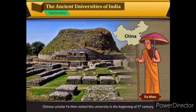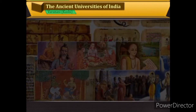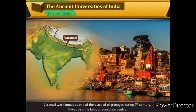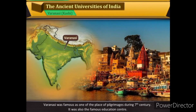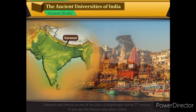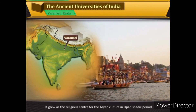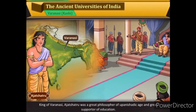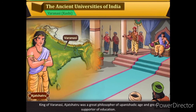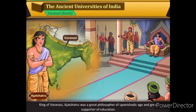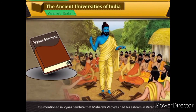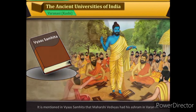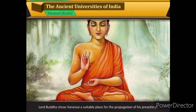Chanakya, the mentor of Chandragupta Maurya, also studied here. Chinese scholar Faxian visited this university in the beginning of the fifth century. Varanasi, or Kashi, was famous as one of the places of pilgrimage and as a famous education center during the seventh century. It grew as the religious center for the Aryan culture in the Upanishadic period. King of Varanasi, Ajatashatru, was a great philosopher of the Upanishadic age and a great supporter of education.